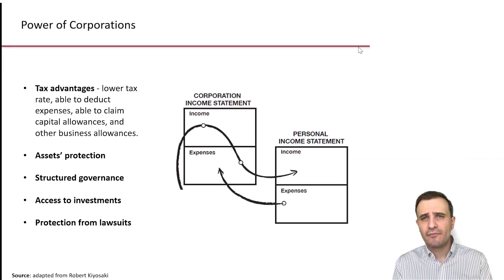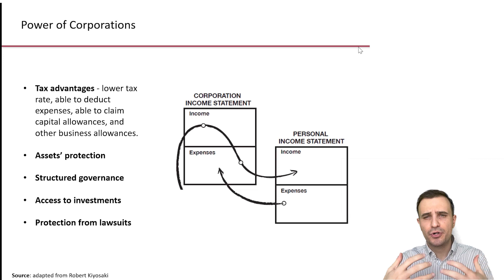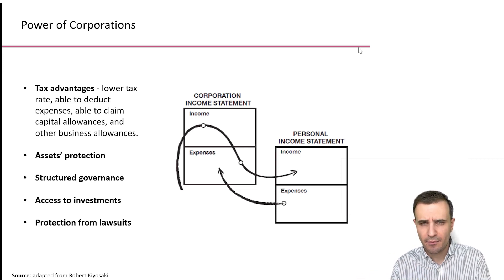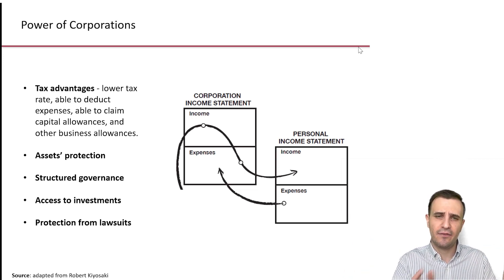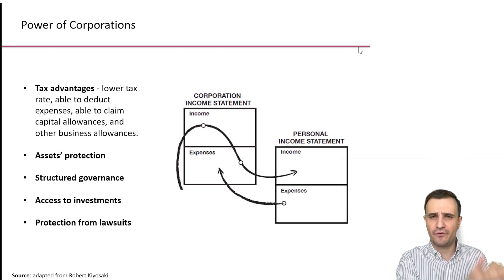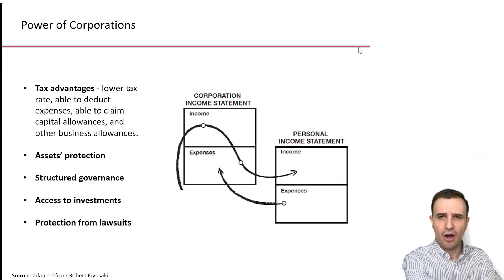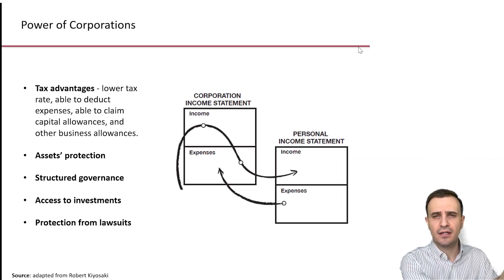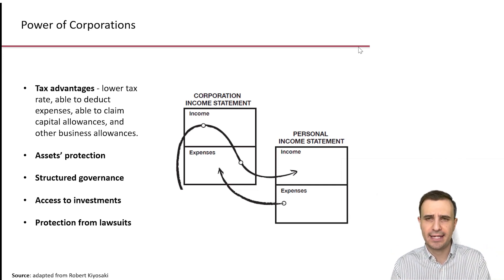Another benefit is asset protection. When you operate a business under a company name, your personal assets won't be mixed with business assets. You have your own home, car, clothes, and devices — these are personal assets. The company owns the office, factory, equipment, and tools — these are separated. If a company goes bankrupt due to business disruption or economic crisis, only the company's assets will be taken by creditors such as banks. Your personal assets will stay with you.